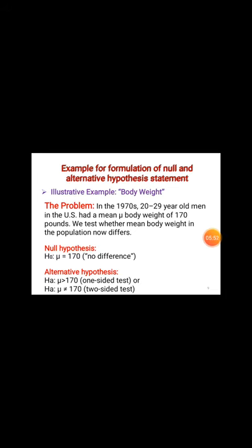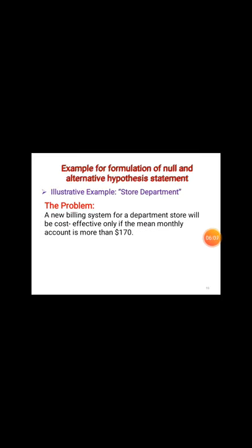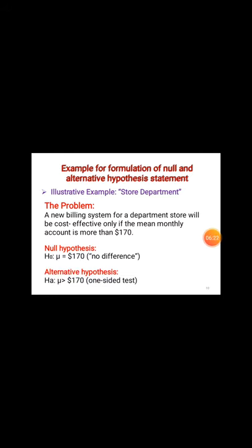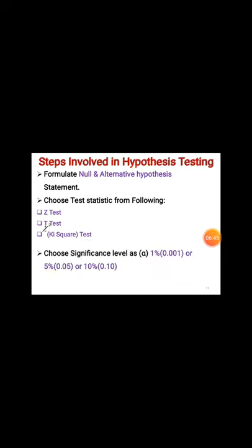In the null hypothesis, equality is always tested. In the alternative hypothesis, the operators used may be less than, greater than, or not equal to. For another example regarding a department store: a new billing system will be cost effective only if the mean monthly account is more than $170. Here the null hypothesis is μ = $170 and the alternative hypothesis is μ > 170, because the problem states the account must be more than $170.